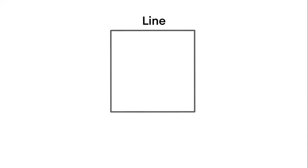First up is line, which can be any type of line. Horizontal, vertical, diagonal, straight, curved, dotted, broken, thick, thin, and so many more.